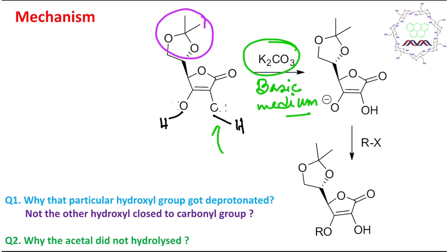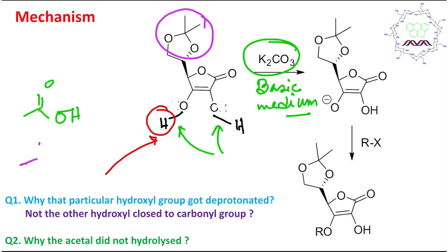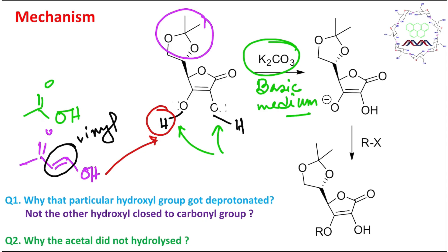These OH groups are acidic because they are attached to electronegative oxygen, but this particular hydroxyl group is slightly more acidic. Why? Because if you consider this part, it is actually a vinylogous acid. I have already discussed the principle of vinylogy — you may visit that for better understanding. This part is called a vinylogous acid because of this vinyl group.